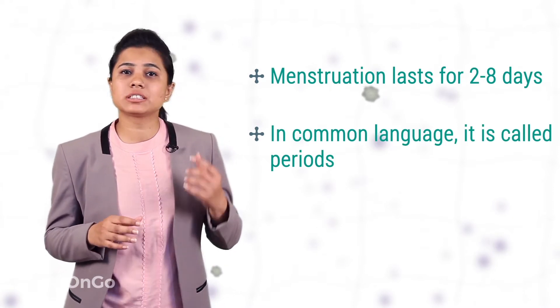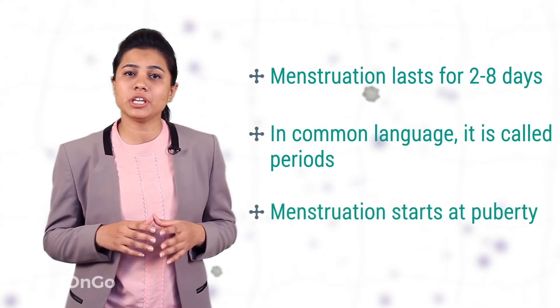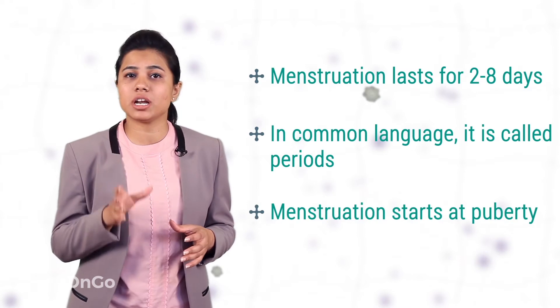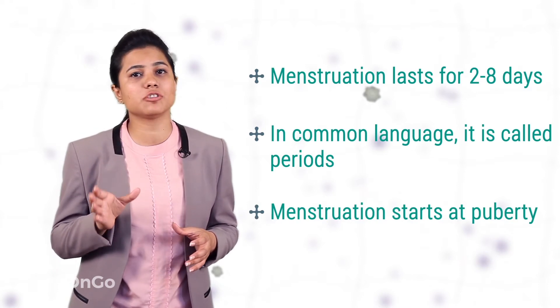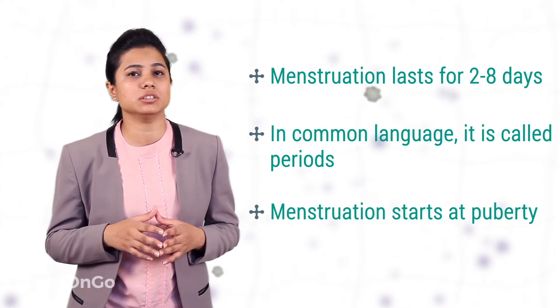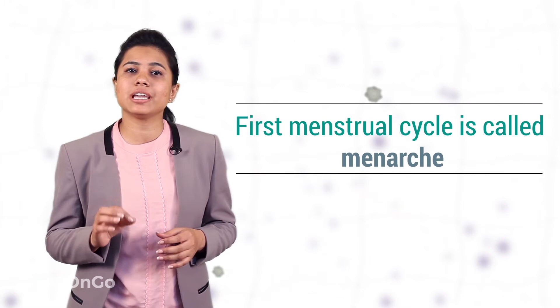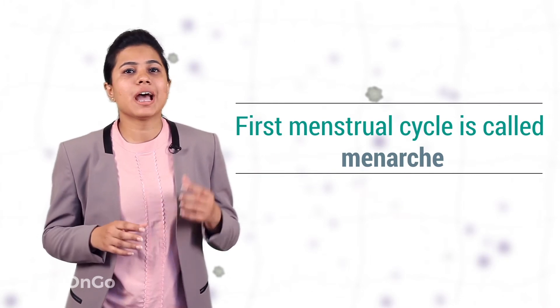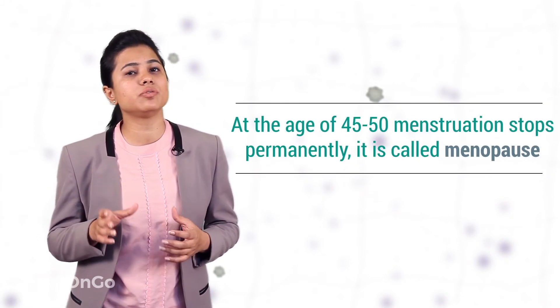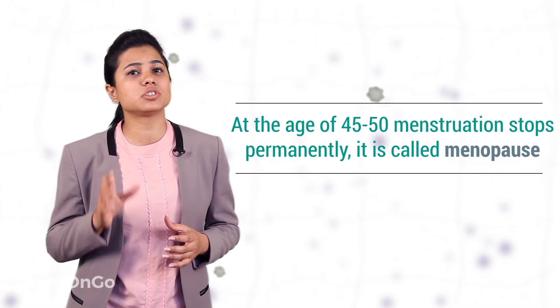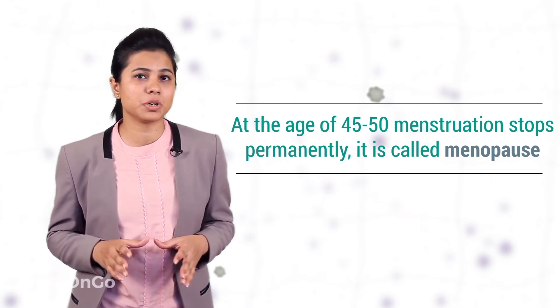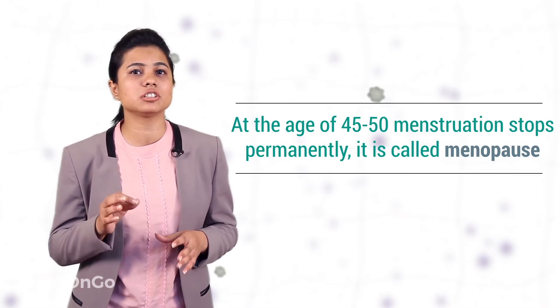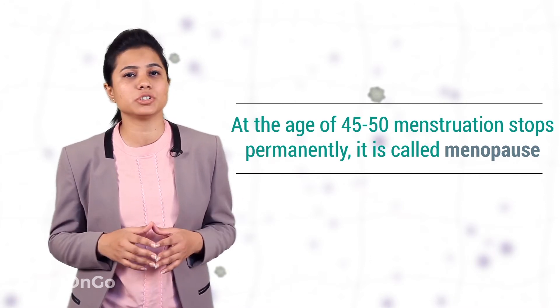It starts in a female when she attains the age of puberty, which is 10 to 14 years. The first menstrual cycle is called as menarche. At the age of 45 to 50, menstruation stops permanently and it is called as menopause.